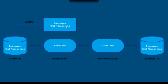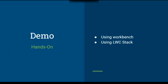Here is a diagram showing how an employee name update happens in Salesforce and synchronizes with the Salesforce database. Whenever this happens, the change event fires in the backend using Change Data Capture and synchronizes to the subscriber. The subscriber can be an external system or an LWC component where your logic is written. After that, it can update an external database, or you can create tasks or update other records in Salesforce.